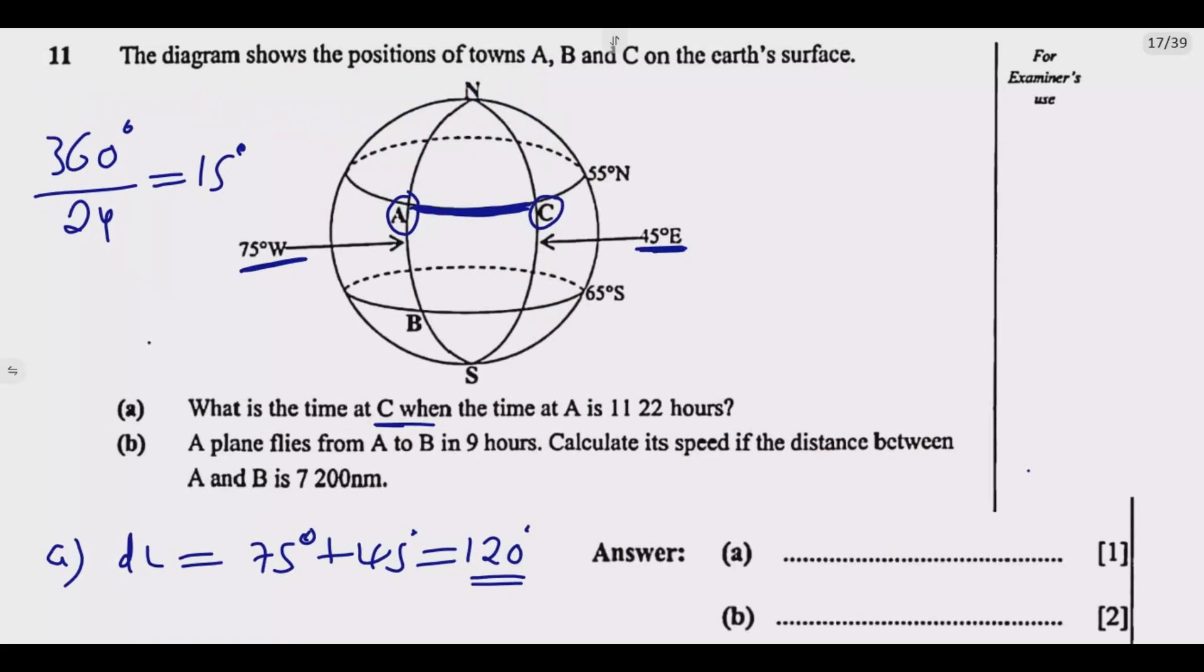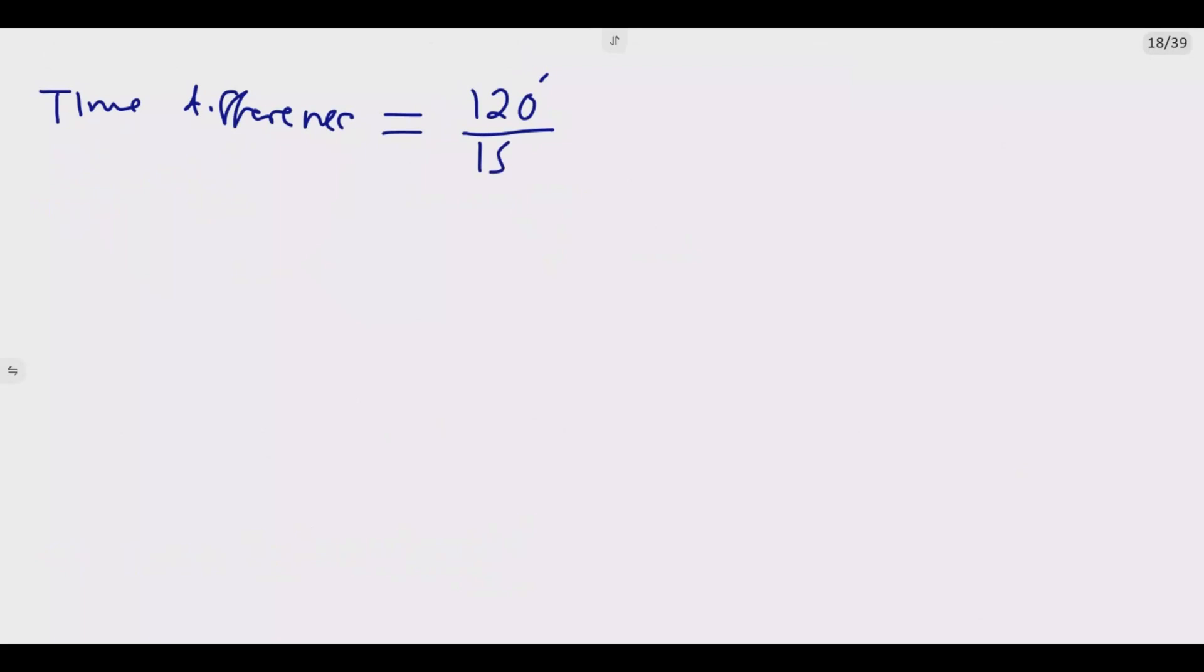So to find the time difference, we need to say time difference will be 120 degrees, which is the difference between these two towns A and C. We divide by this 15. So when we divide by 15 degrees, we are going to get 8. So this is 8 hours. That's a time difference.